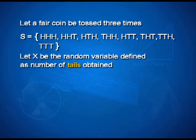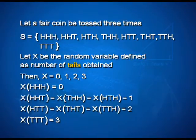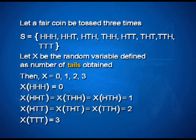But the moment I change x from this definition to defining number of tails obtained with the same sample space, the number of values that x takes remains 0, 1, 2, and 3, but now 0 gets associated with HHH, whereas in our earlier case it was 3 that was getting associated. So now x is counting number of tails, and therefore HHH gets associated with 0, and correspondingly there is a change in other outcomes.